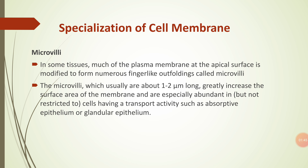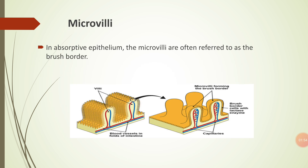Within the cytoplasmic processes, which are subjacent to a terminal web, the outer surface of the microvilli is covered by a coat of filamentous material — a fuzzy coat composed of glycoprotein macromolecules. Microvilli increase the effective surface of absorption, as seen in the diagram. In the absorptive epithelium, the microvilli are referred to as the brush border.